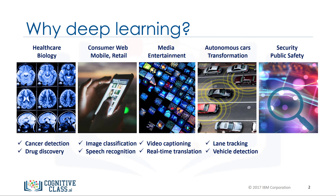In autonomous cars, deep learning is trying to overcome key concerns such as sign and passenger detection and lane tracking. In security, deep learning is used for face recognition and video surveillance. Deep learning is used in many other fields and domains as well.